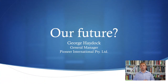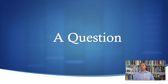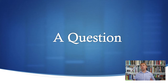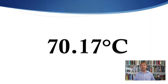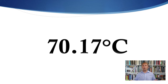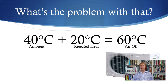So the future of air conditioning — I thought I'd start with a question. What is the critical temperature of the F gas refrigerant R410A, the common refrigerant that most companies use today in air conditioners? It's 70.71 degrees. So why is this important? Let's have a look.